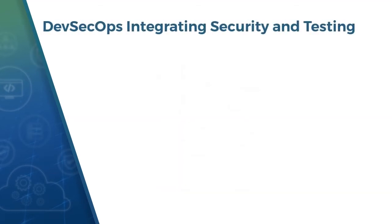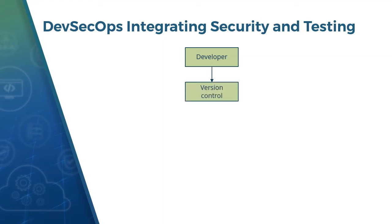Now we will look into DevSecOps integration from the perspective of security and testing. Developers will be using pre-commit hooks, where they review changes to code and configuration before they commit to the source code repository. Once check-in is done in version control, before moving to the CI server, you need to do commit-time checks using incremental SAST with pre-defined rule sets to provide quick feedback for developers within seconds of code check-in.